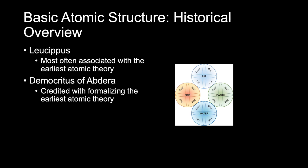The basic atomic structure — the historical overview. You have Leucippus and Democritus of Abdera. Although it is believed that some basic ideas of atomism or atomic theory predate Leucippus, his name is most often associated with the earliest atomic theory. His ideas were vague, and it is his student and follower Democritus of Abdera who provided one of the most detailed and elaborate theories and is credited with expanding on and formalizing the earliest atomic theory.